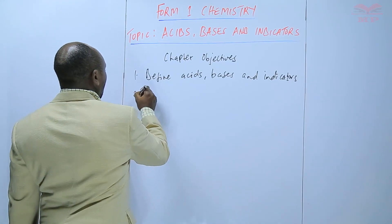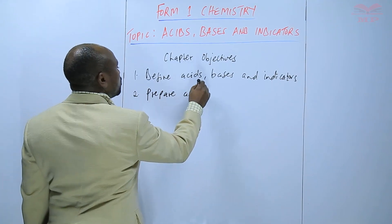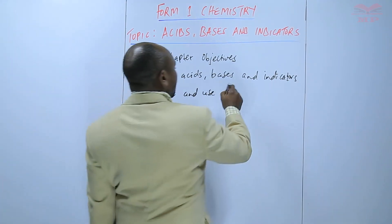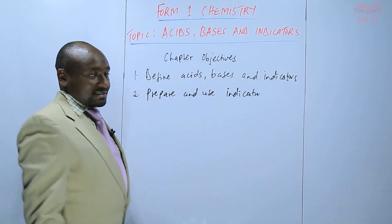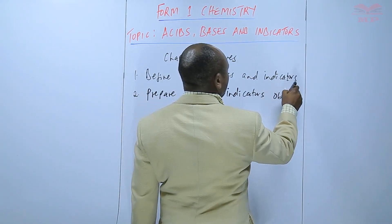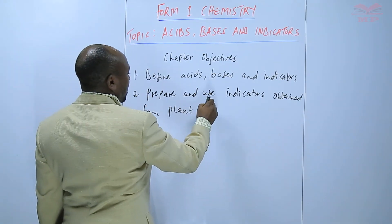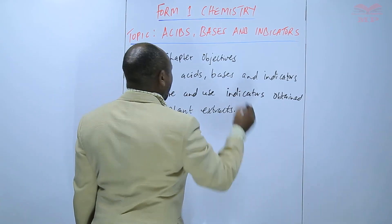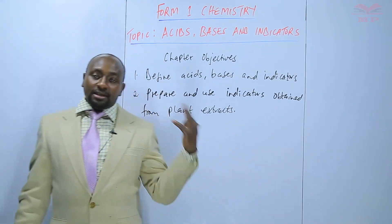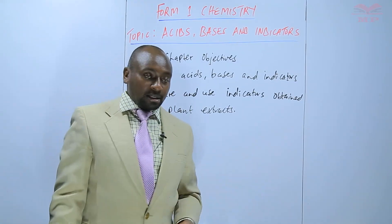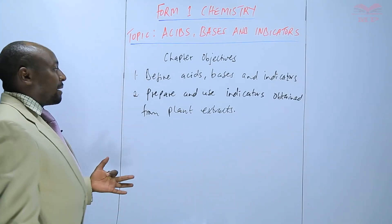Number two, we should also be in a position to prepare and use indicators that are obtained from plant extracts. There are some plants that we can extract indicators from, and then use them in this topic. We can use the leaves of some plants, others we can use the flowers, and so on and so forth to come up with indicators.